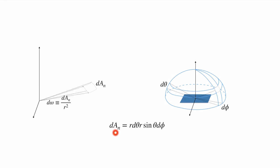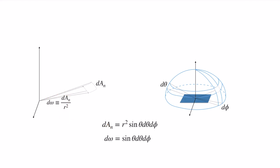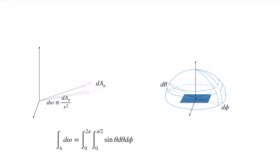We can calculate dA_n: one arc length is r dθ, and the other dimension is r sinθ dφ, giving dA_n = r² sinθ dθ dφ. Using the definition of the differential solid angle, we get dω = sinθ dθ dφ. This will be a useful tool moving forward.